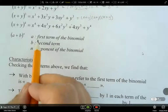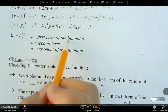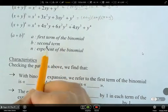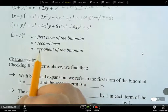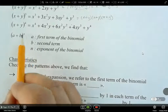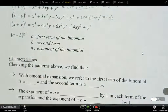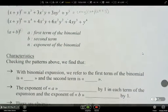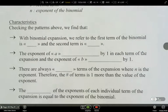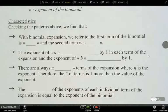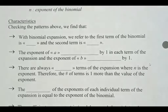Just some definitions here. A is the first term in the binomial. B is the second term in the binomial. N is the exponent of the binomial, okay? And there's some characteristics that we need to familiarize ourselves with. So if we look at the patterns, when we expand them from above, what do we see?